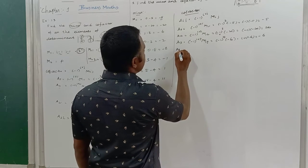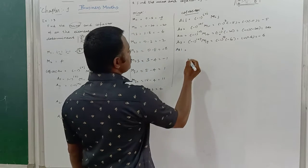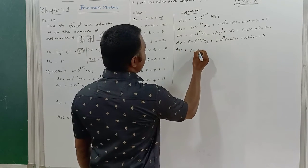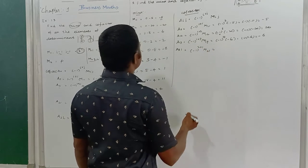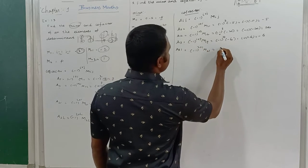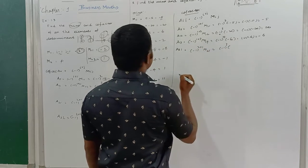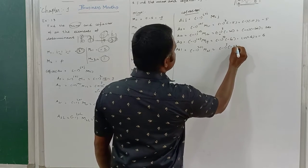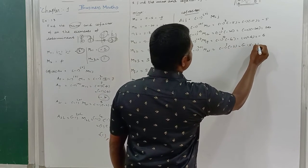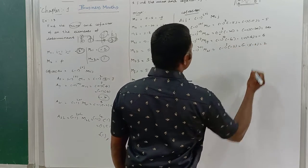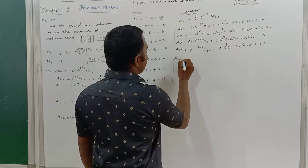A21 = (-1)^(2+1) × M21 = (-1)^3 × (minus 2) = minus 1 × minus 2 = plus 2.